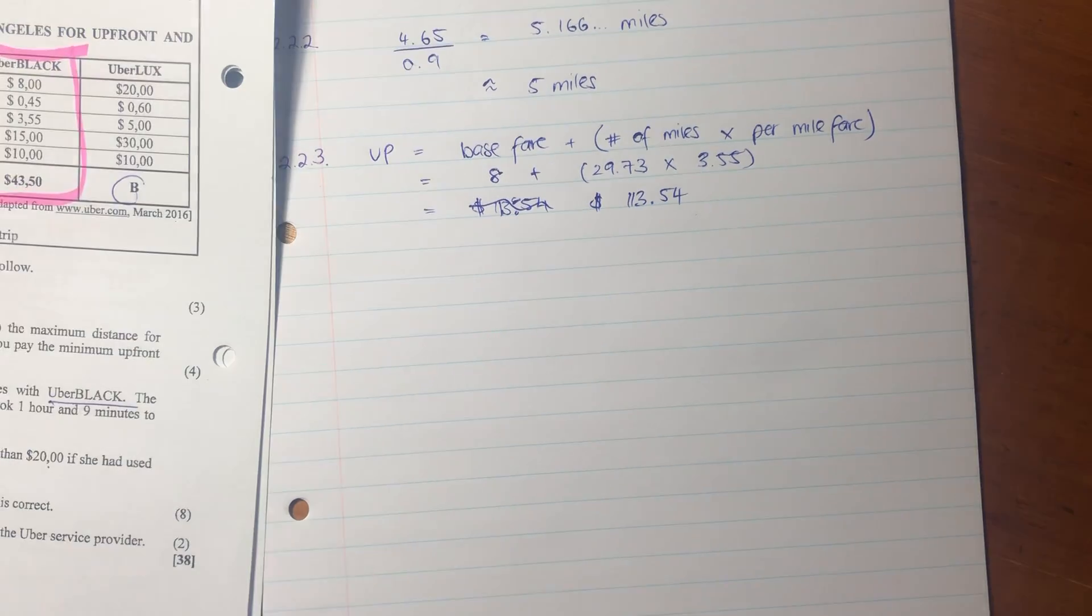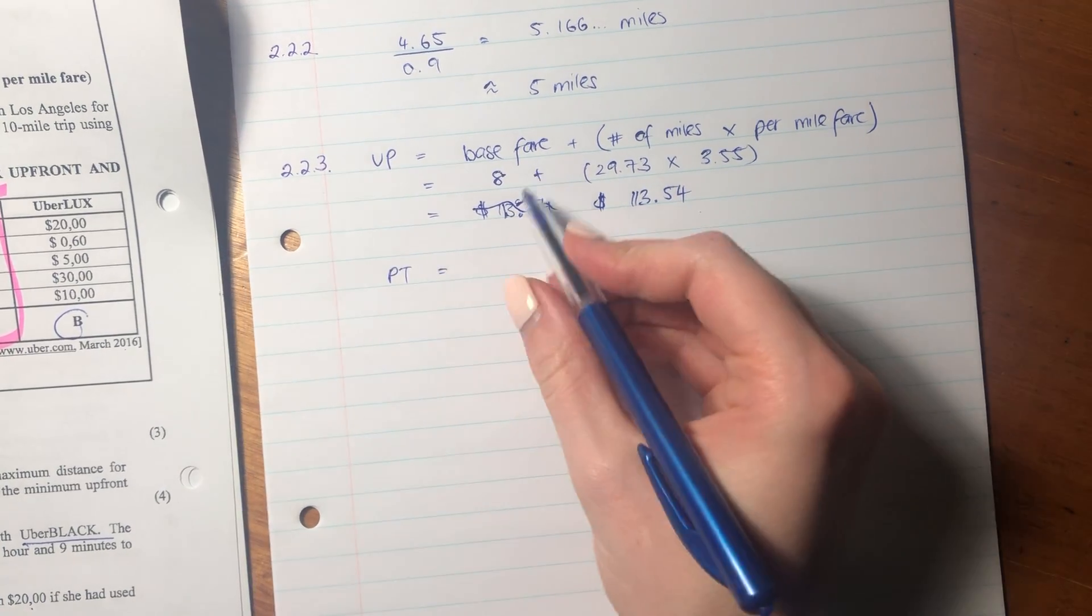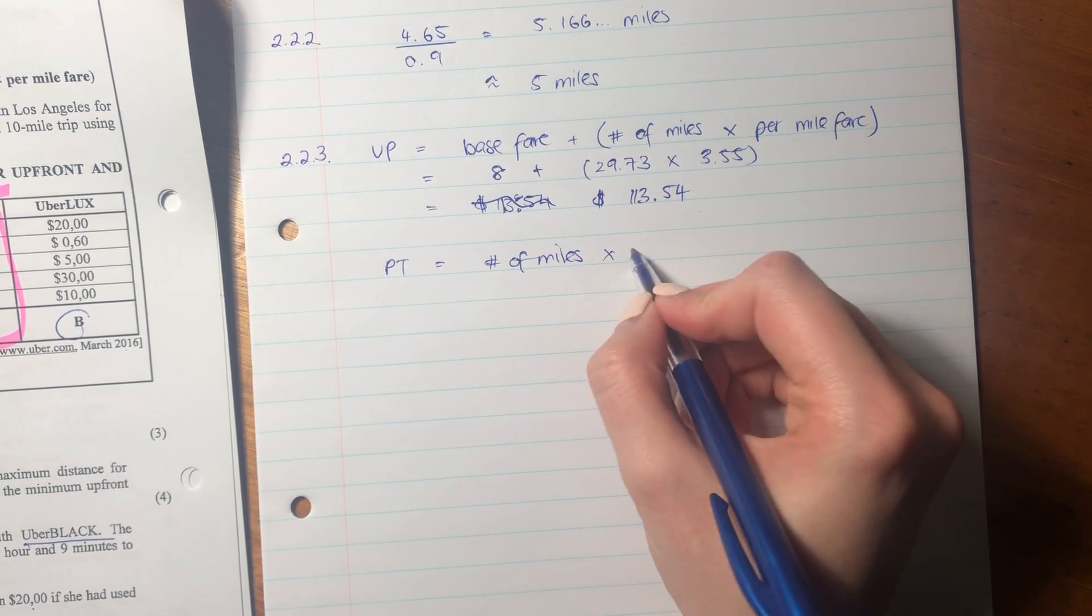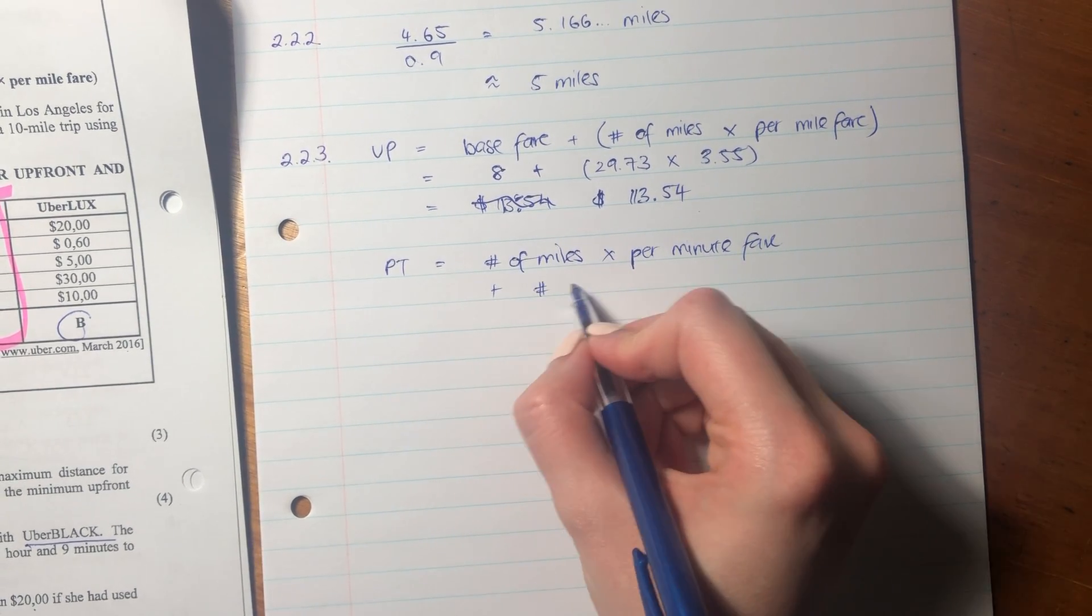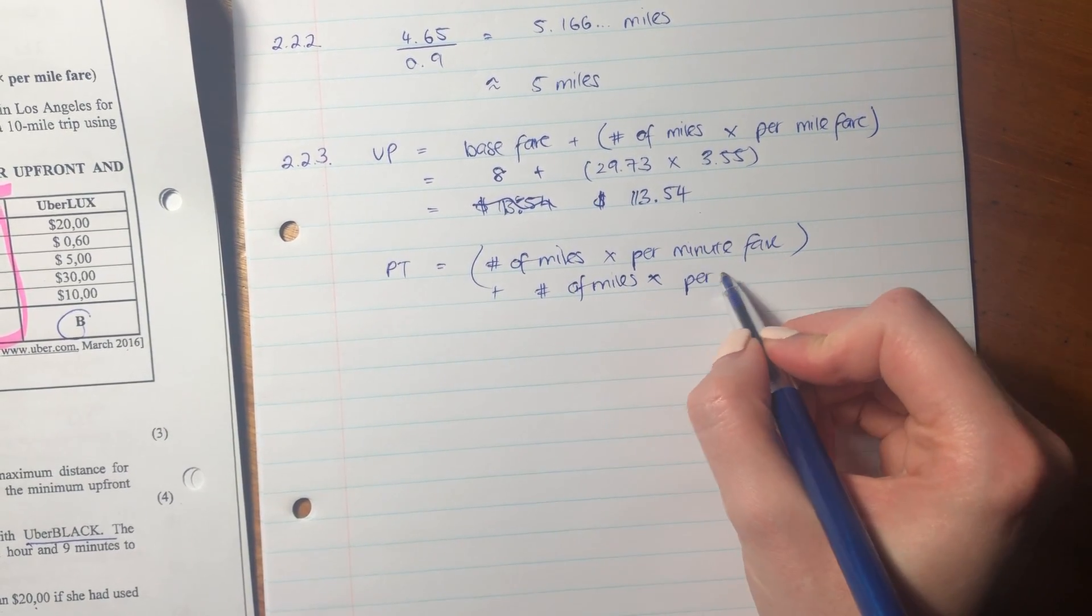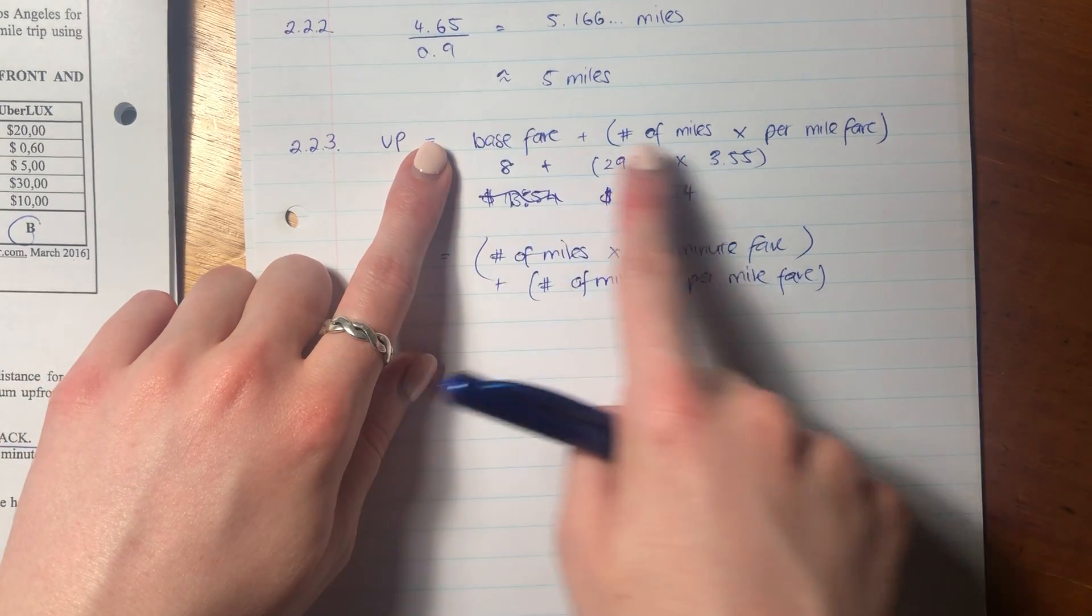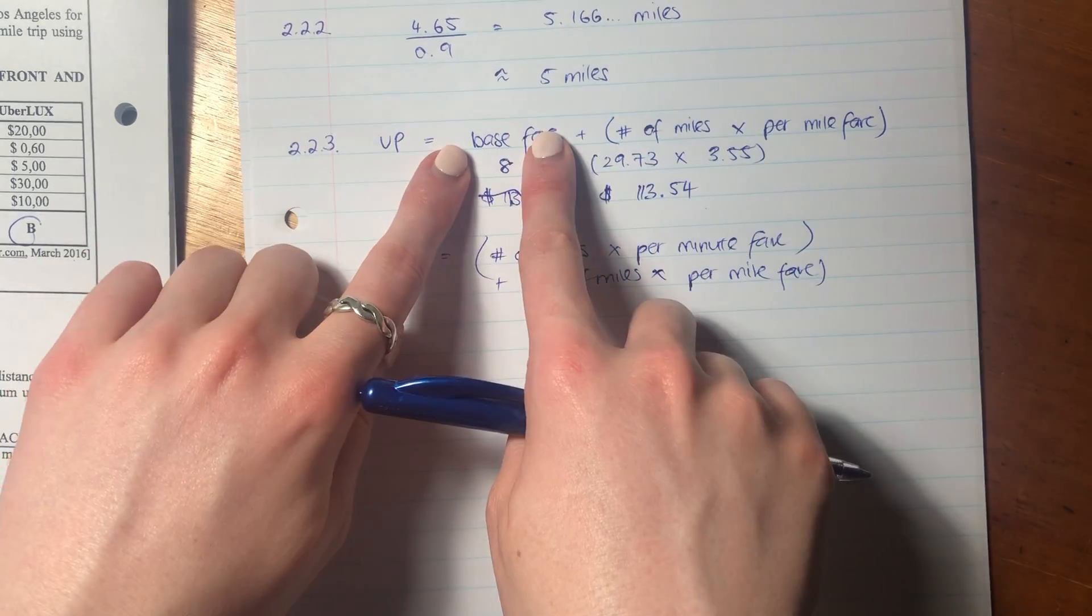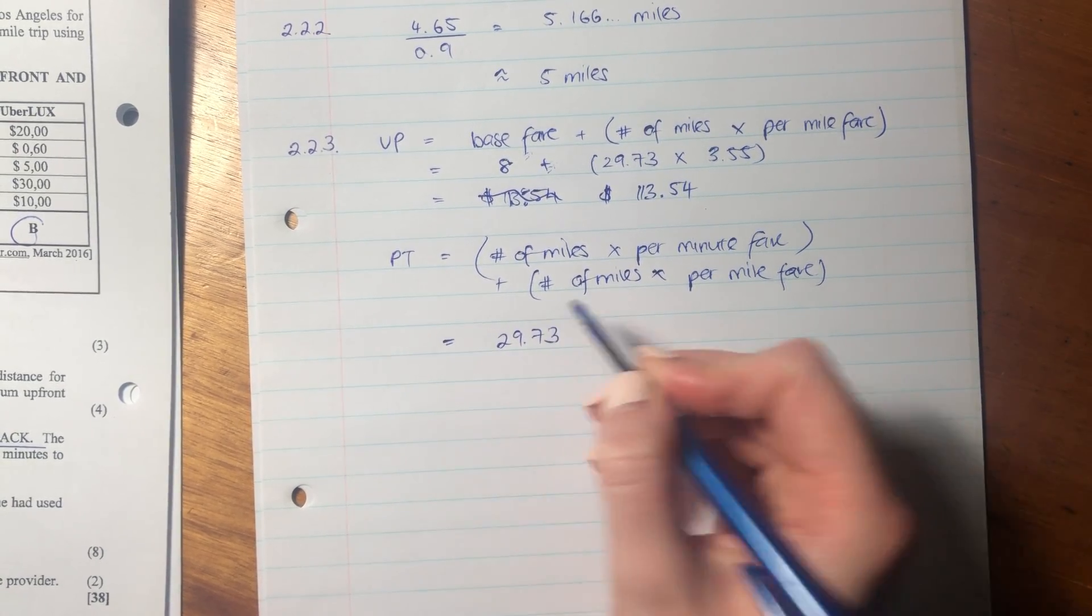Now let's do exactly the same. So it's not the same formula, but we're going to go about the same way. The post-trip fare we know is the number of miles times per minute fare plus the number of miles times the per mile fare. So you see, the only difference between these two formulas is the first term. So this bracket here is in both of the formulas. It's this first term that's different. There it's the base fare. There it's the number of miles times by the per minute fare.